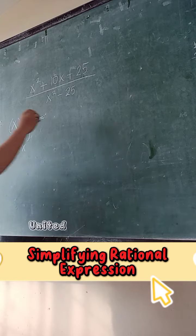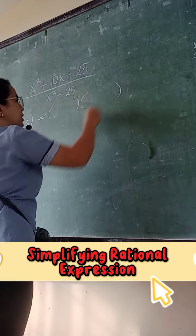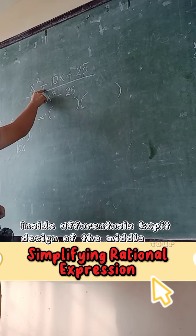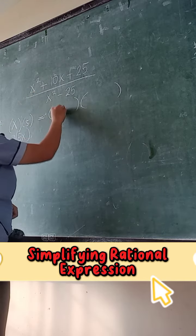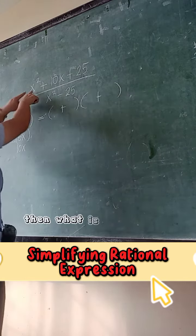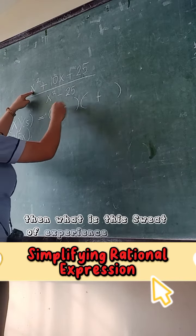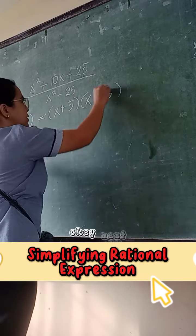So what we're going to do, you need to write two parentheses. Inside the parentheses, copy the sign of the middle term. What is the middle term? Plus. Positive or plus. Then what is the square root of x squared? X. Square root of 25? 5. Okay, next. Tapos na tayo kay numerator.